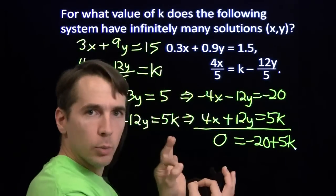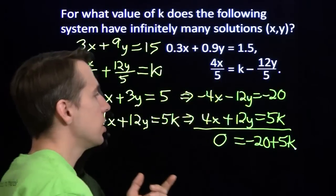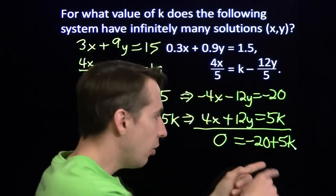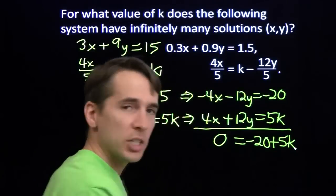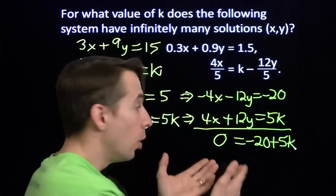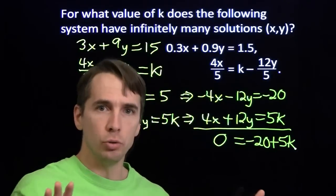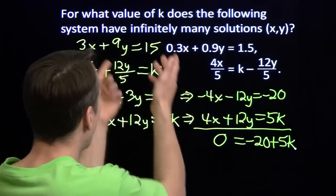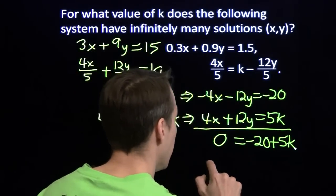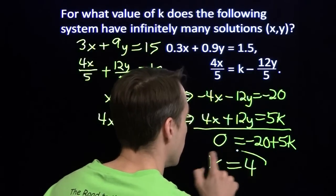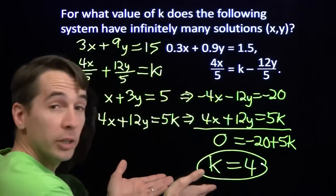It tells us we've got infinitely many solutions to this system. If k is anything else, anything other than 4, then this expression on the right is something other than 0. We get an equation that is never true. We have a system with no solutions at all. So the only way we can have a system of equations here with infinitely many solutions is when k equals 4, and we are done.